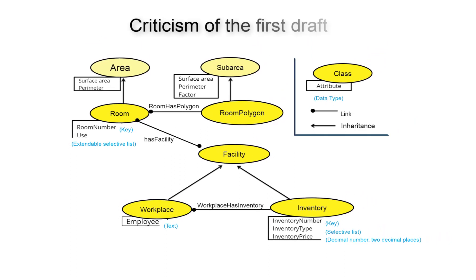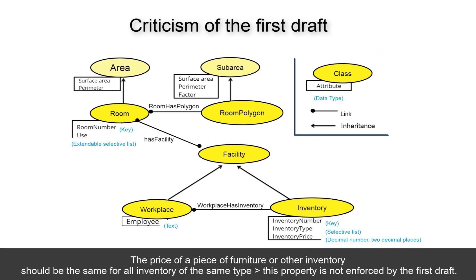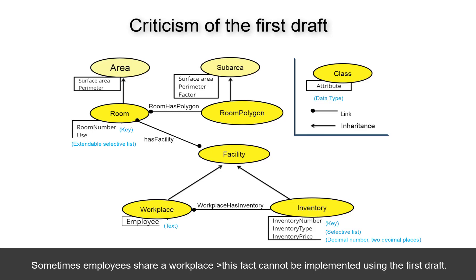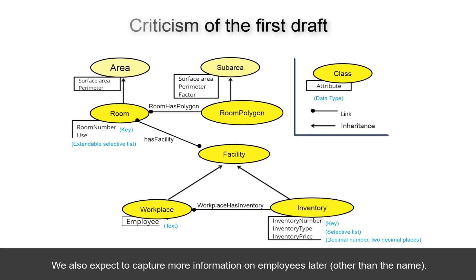Criticism of the first draft. The prices of a piece of furniture or other inventory should be the same for all inventory of the same type. This property is not enforced by the first draft. Sometimes employees share a workplace — this fact cannot be implemented using the first draft. We also expect to capture more information on employees later, other than the name.